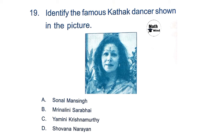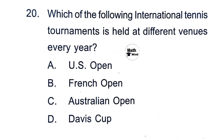Question 19: Identify the famous Kathak dancer shown in the picture. Option D is correct: Shovana Narayan. Question 20: Which of the following international tennis tournaments is held at different venues every year? Option D is correct: Davis Cup.